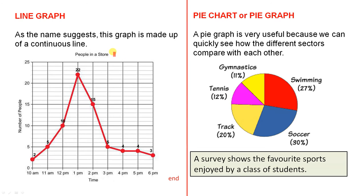We had a look at the number of people in a store at different times of the day. So here we have the different times and here we have the number of people. For example, at 10am we had two people, 11am 5, 12pm or midday 10, etc.